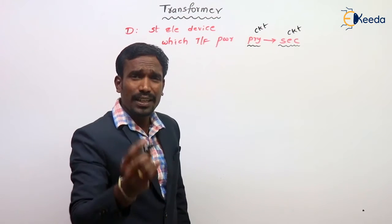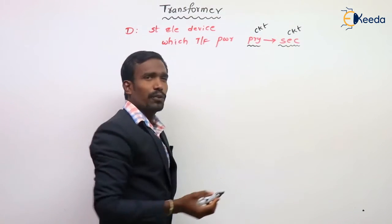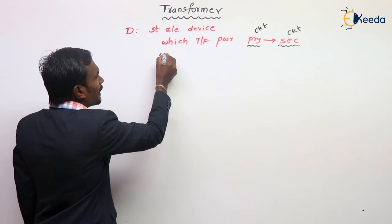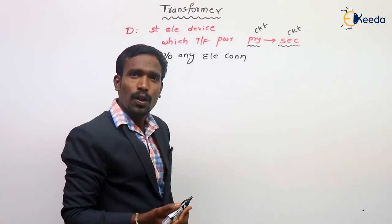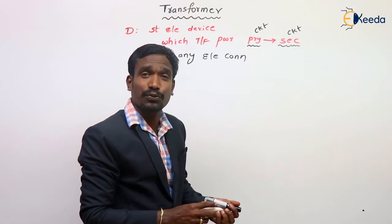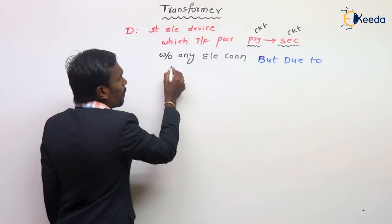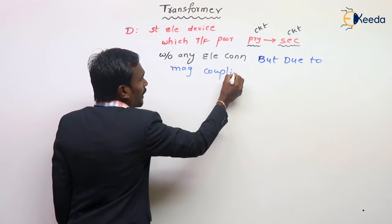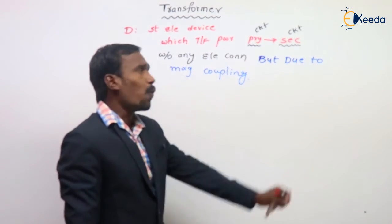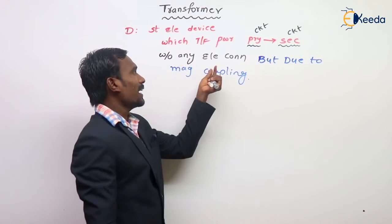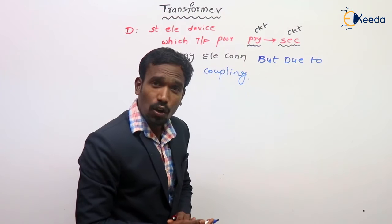In general, this is a transformer. But here the main thing is that transformer is a static electrical device which transfers the power from primary to secondary without any electrical connections, but due to magnetic coupling. This is called a transformer.